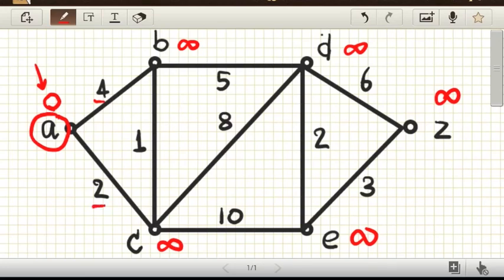You can see that if you add zero to four, which equals four, this four is less than infinity, the current cost of B. So we will now set the cost of B to four, the new value. And the cost of C to zero plus two equals two.